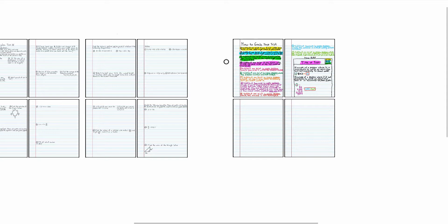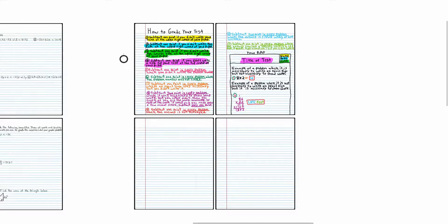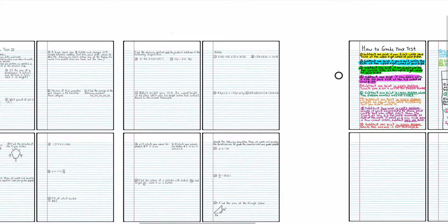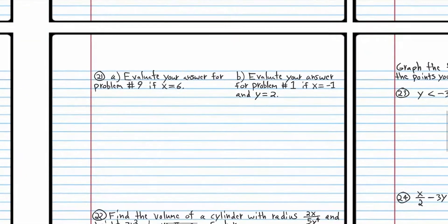We're back. You should have the test finished, so let's talk about grading your test. I think there was only one problem that had multiple parts. For problem 21, it would be two points for part A and two points for part B.